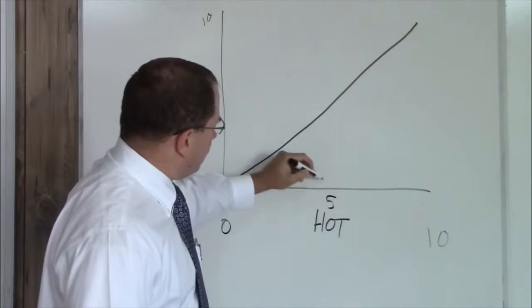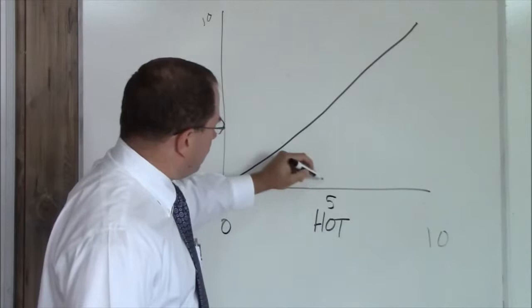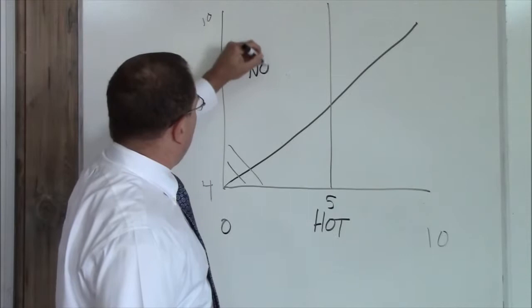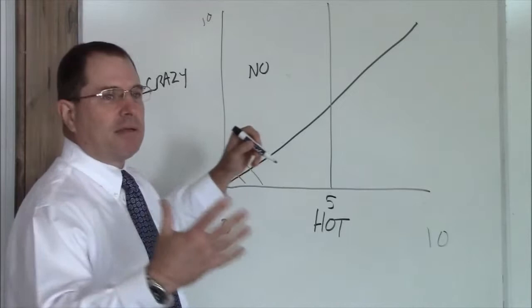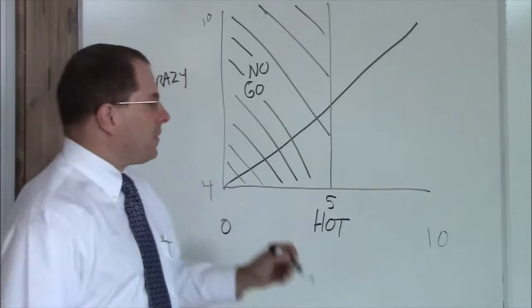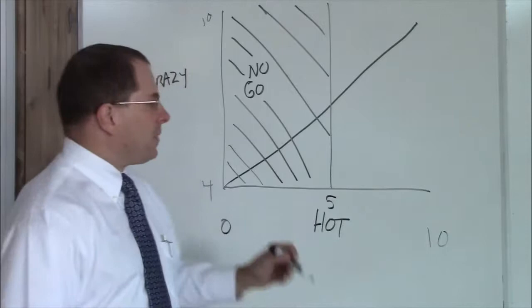Very important that you keep in mind where the hot crazy line is. As a rule this is your no-go zone. We do not hang around and date and marry women who are not at least in our mind a 5. So this is your no-go zone. You don't go here. We just rule this out. Life is better this way.